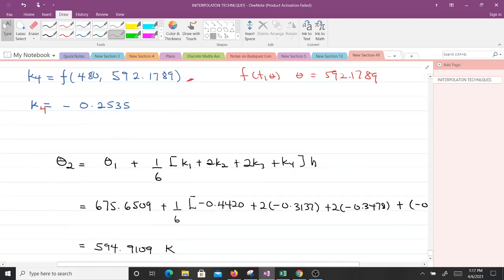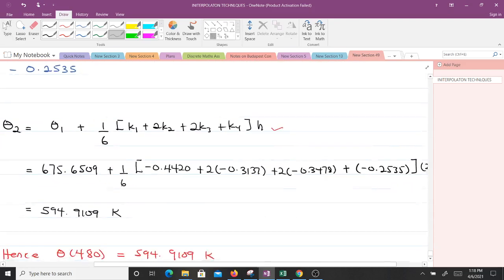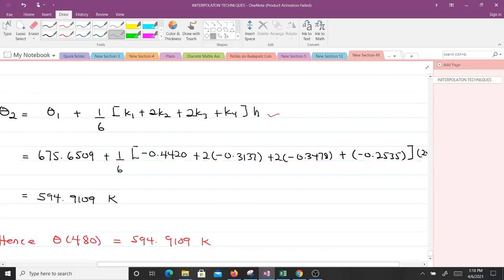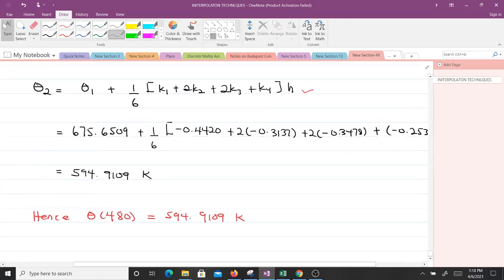You can then come and put it inside your formula here. When you get theta 2 to be equal to whatever we have here, when you make substitution, in evaluating that will give us 594.9109 Kelvin. Meaning theta of 480 equals 594.9109 Kelvin.